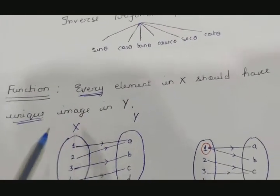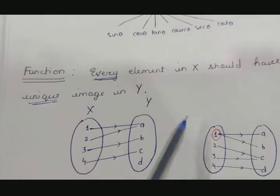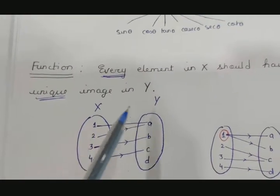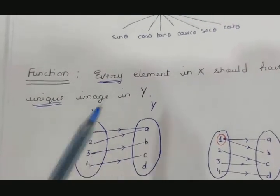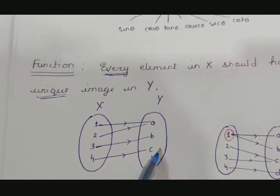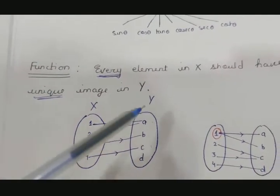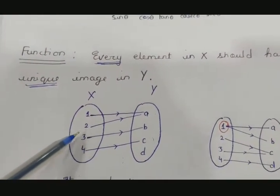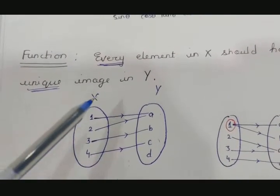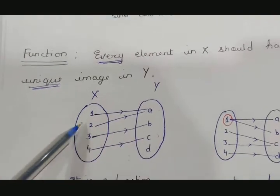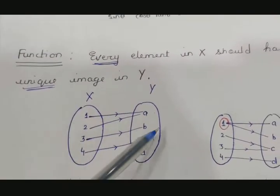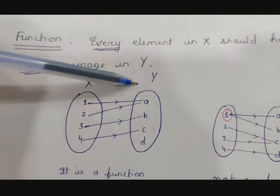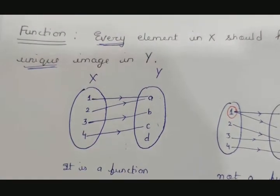We all know that x is called the domain and y is called the co-domain. Here if we look at our example: 1's image is a, 2's image is also a, 3's image is b, and 4's image is c. This is our domain and this is our co-domain. All elements in x have an image formed, and each has a single image.